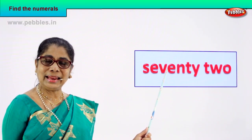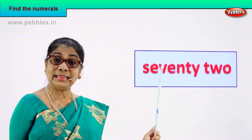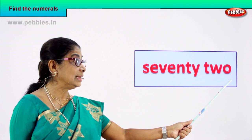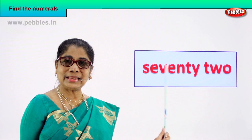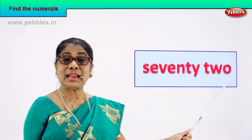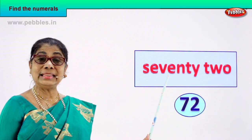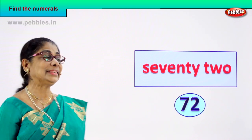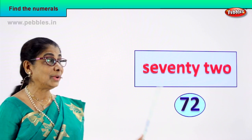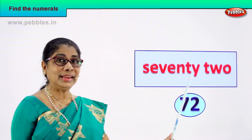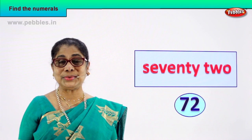Let's take the next number name. Spell: S-E-V-E-N-T-Y, 70. T-W-O, 2. 72. How do we write the numeral 72? Seven and two, 72. You learn to read the number name — 72, seven and two is the numeral. Good.